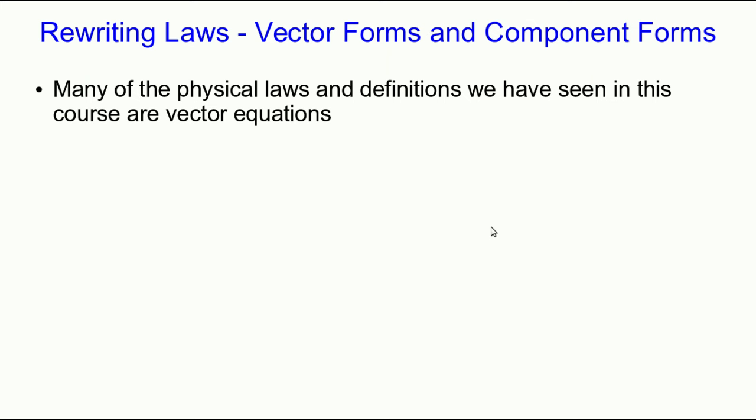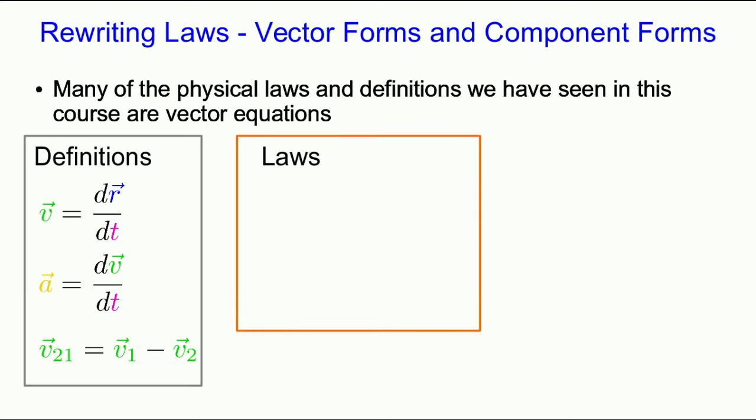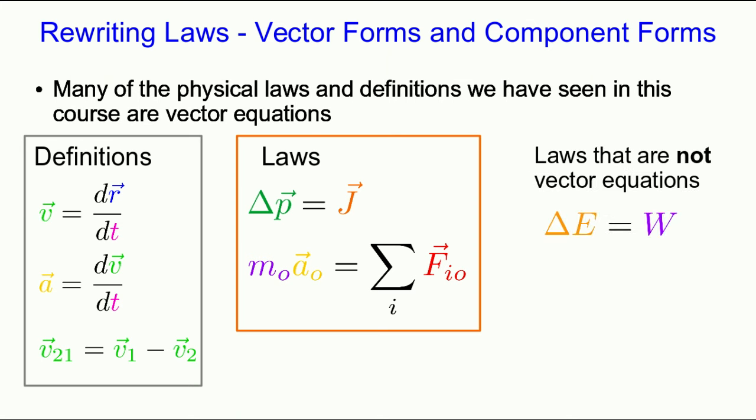So we already know lots of examples of physical laws and definitions that are vector equations. We have definitions like the definition of velocity and acceleration and relative velocity, and laws like the conservation of momentum or the equation of motion, which is in fact just a different way of writing conservation of momentum. But we also have laws that are not vector equations. For example, conservation of energy is not a vector equation.